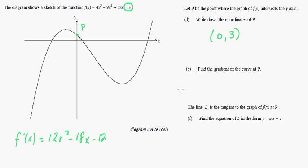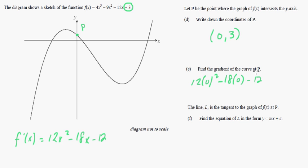Find the gradient of the curve at P. We use the derivative, and just plug in x equals 0. So it's 12 times 0 squared minus 18 times 0 minus 12. Our answer is negative 12. That's the gradient.